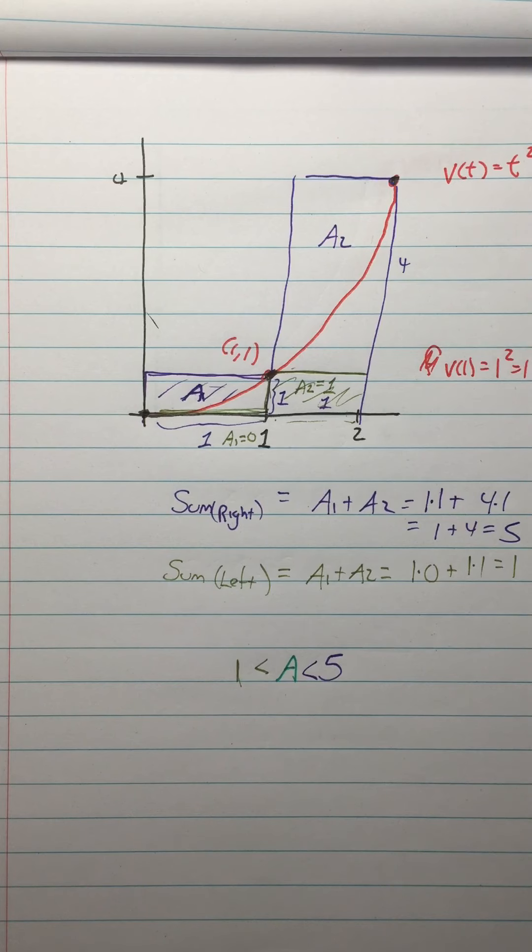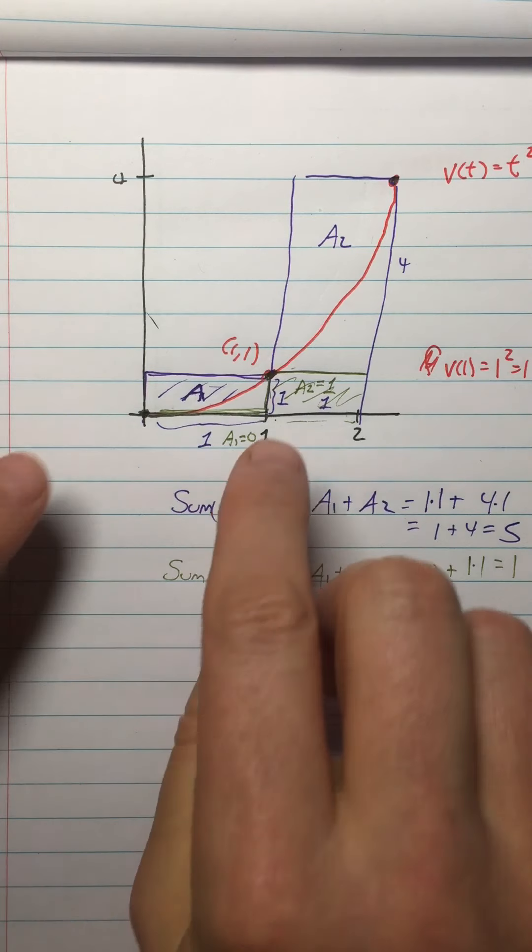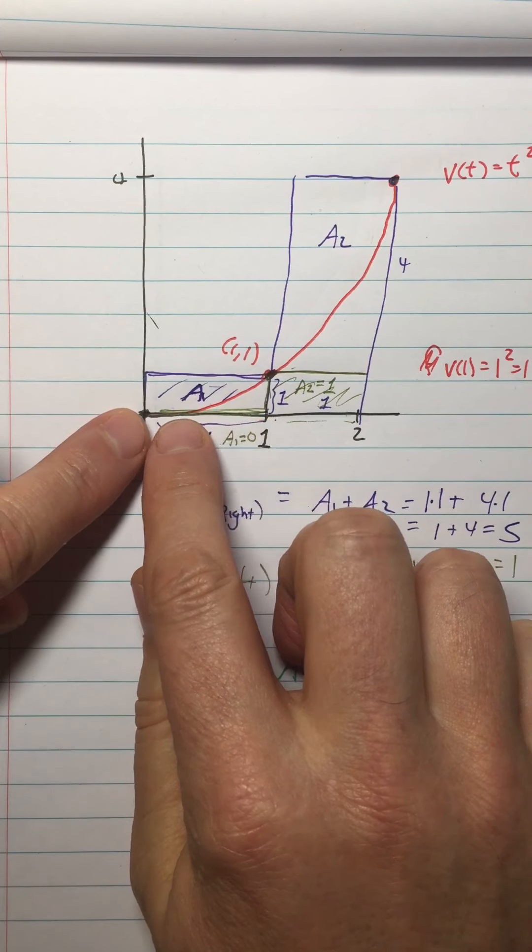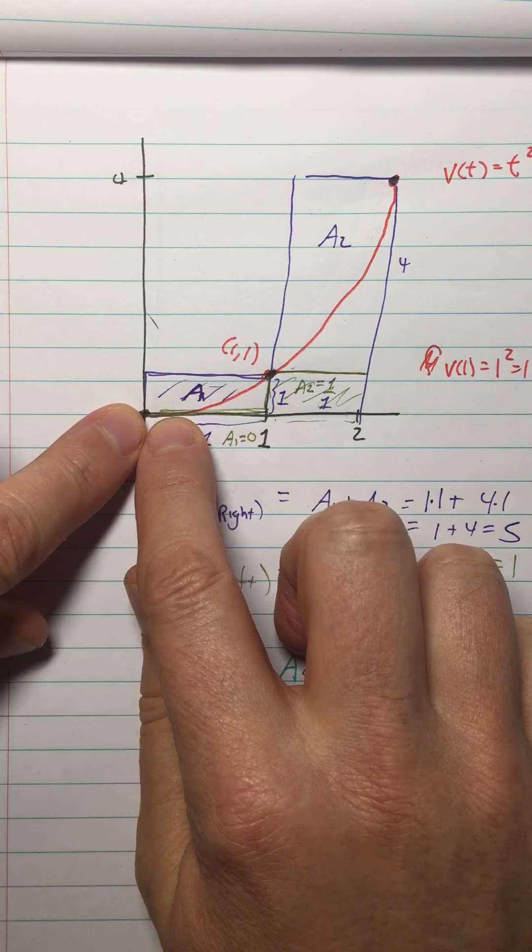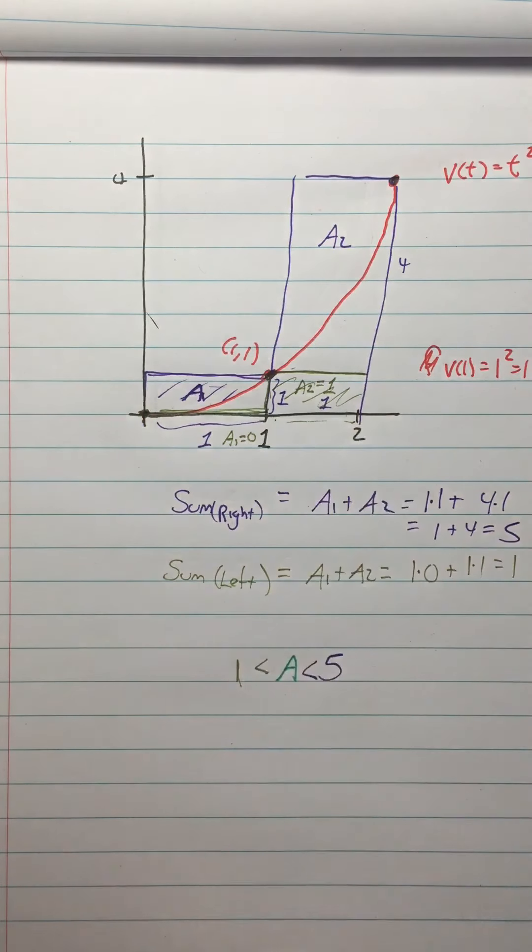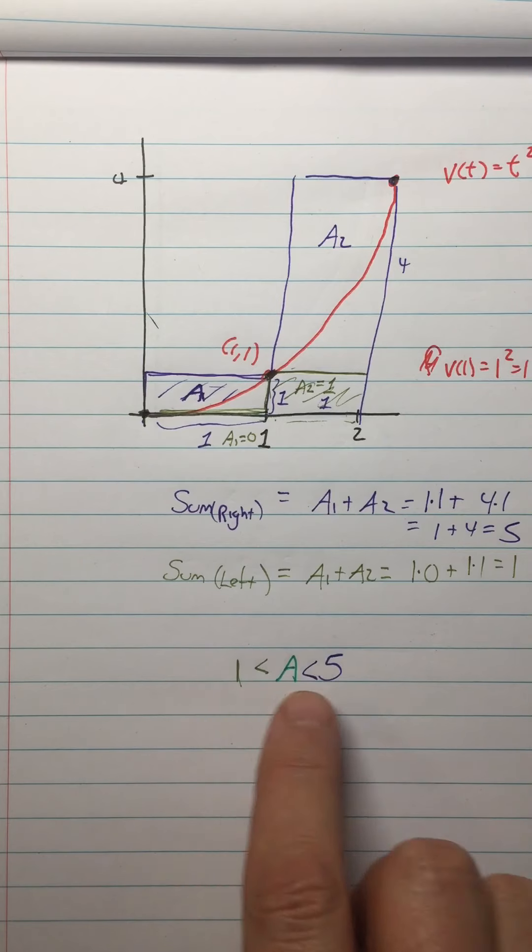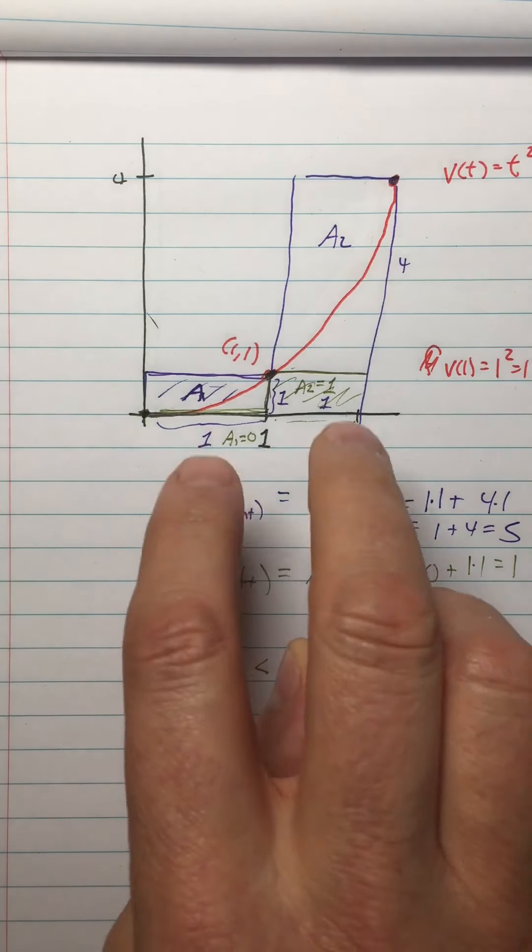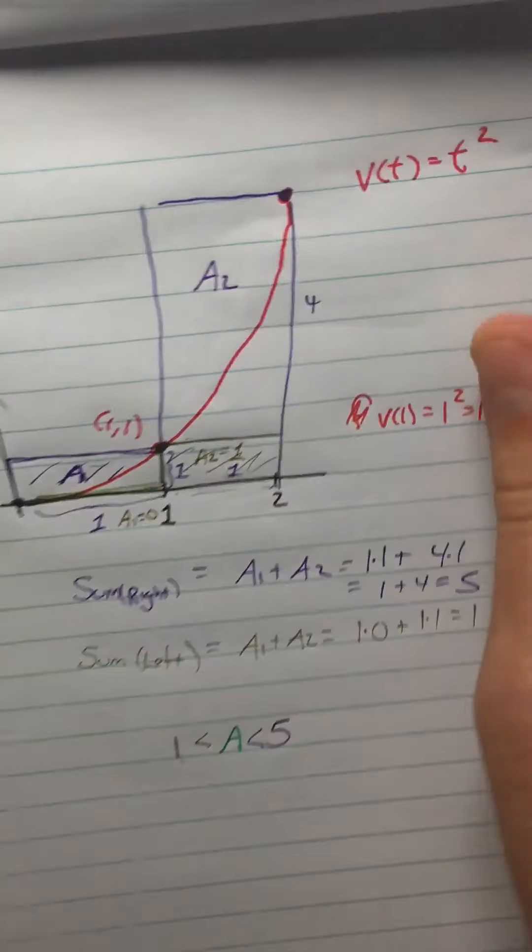Where we're headed is that we have this tool called the limit. And using the limit, I can get an idea of what would happen if the width of the rectangles is 0, and there are infinitely many of them. That's where we're headed. But what we're going to start with is finitely many rectangles.